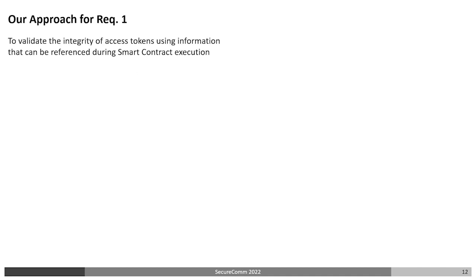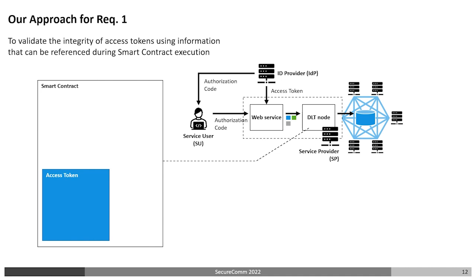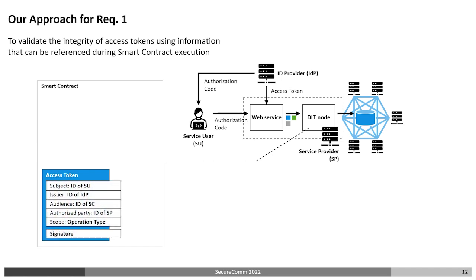Our approach to requirement 1 is to verify the integrity of the access token using information that can be referenced during smart contract execution. When a service user requests a service, the ID provider issues an access token to the web service according to the OIDC protocol. The web service passes this access token to the DLT node, which invokes the smart contract. Among the information contained in the access token, four types of ID information, scope, and digital signature are noteworthy. Subject, issuer, audience, and authorized party contain the ID of each entity. Scope contains the types of processing allowed with this access token, such as read or write. The signature contains the digital signature of the ID provider who issued this access token.